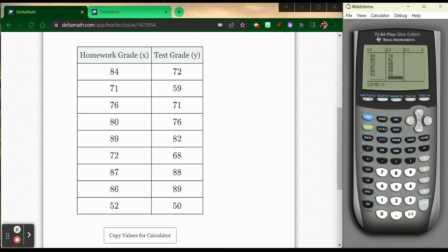Now you want to make sure that these numbers are in line with each other. So 52 is next to 50, 86 is next to 89, 87 is next to 88, because these numbers are pairs. They're associated with each other. Now that I have everything in here, I want to go ahead and do my linear regression equation.